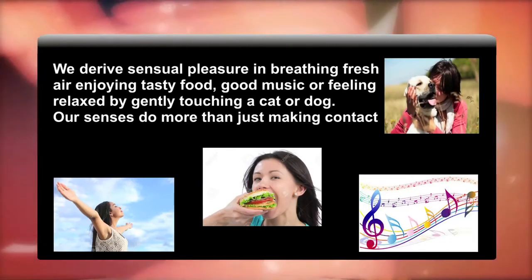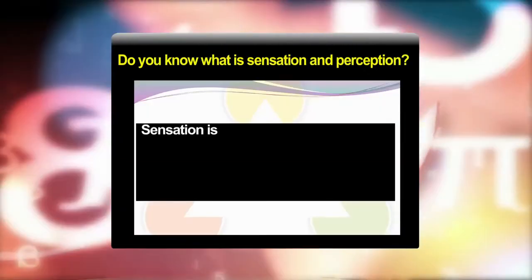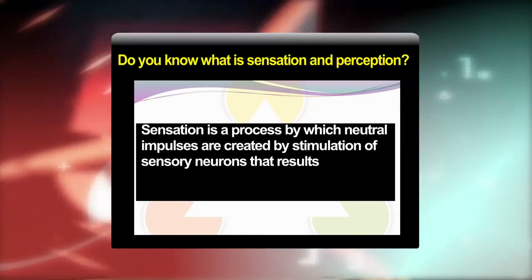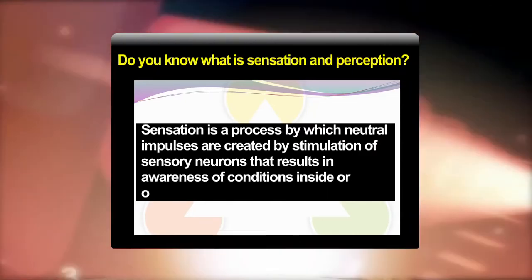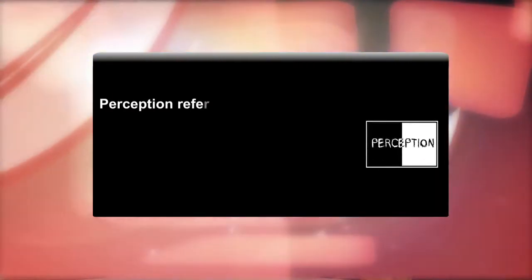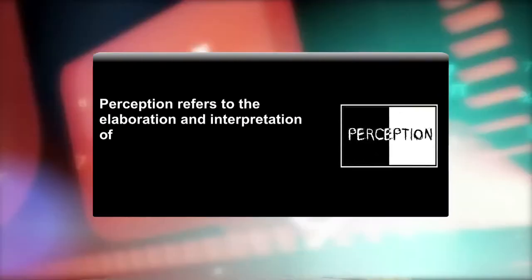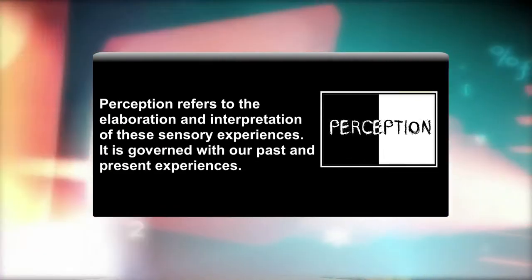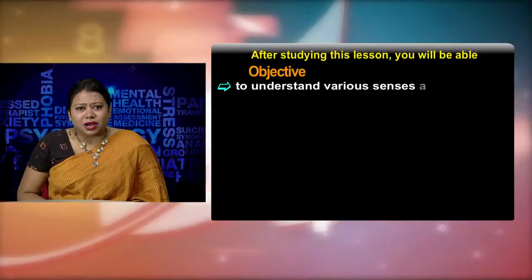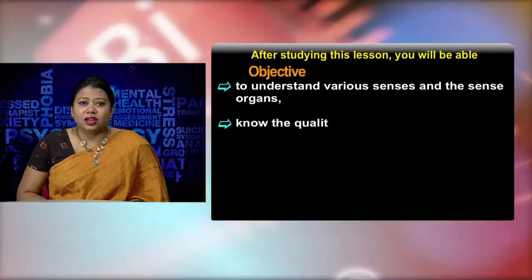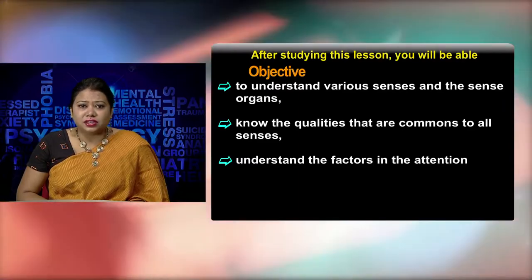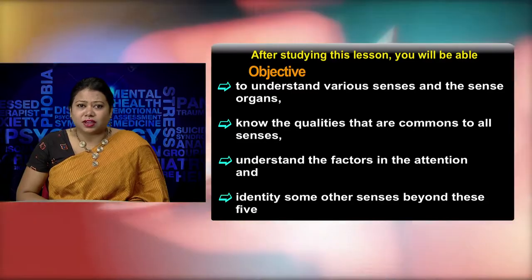Our senses do more than just making contact with our external world. Sensation is a process by which neural impulses are created by stimulation of sensory neurons that results in awareness of conditions inside or outside the body. Perception refers to the elaboration and interpretation of these sensory experiences, and is governed by our past and present experiences. In this lesson you will learn about various senses and the sense organs, know the qualities that are common to all senses, understand the factors in attention, and identify some other senses beyond these five senses.